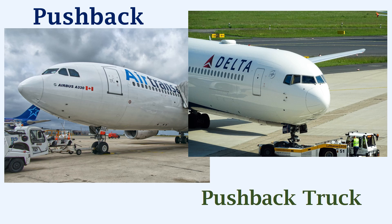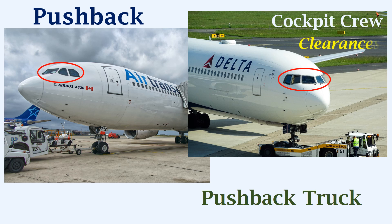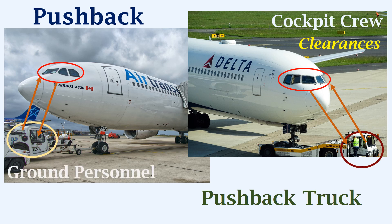Before the pushback commences, the cockpit crew is responsible for obtaining the required clearances from the ground control of the ATC. After obtaining the clearance, the cockpit crew informs the ground personnel that pushback can be initiated, and the ground personnel informs the crew to release the parking brake of the aircraft. Ground personnel such as the person driving the pushback truck and other personnel around the aircraft — called wing walkers — are responsible for the external safety of the aircraft.